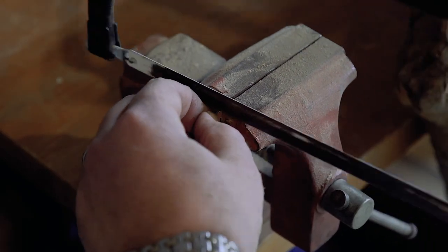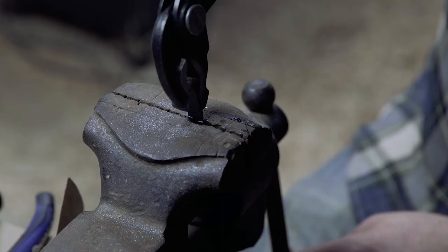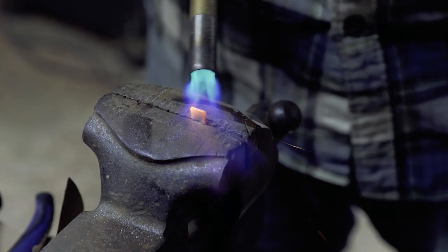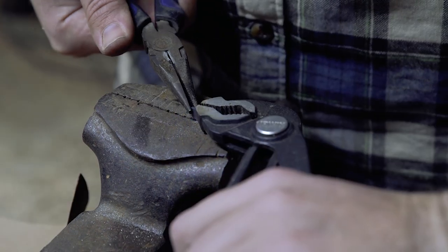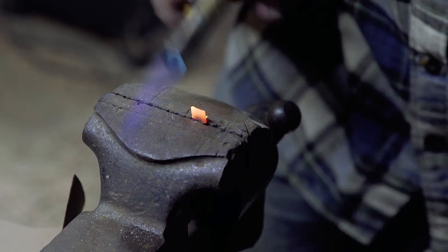I started by working on the nib, the pokey bit that strokes characters to the page. I was looking for some brass shim stock when I found a hinge that looked shockingly like something that might write something someday.